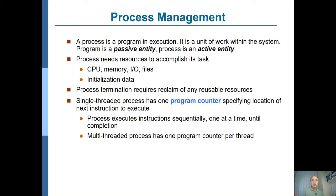Execution continues until the last instruction, which also terminates the whole process. Multi-threaded processes have one program counter per thread, because each thread could be at a different point, so the next instruction for each thread would be different. Note that if you have a single-core CPU, there is only one physical program counter register — it is assigned the value from the program counter of whichever thread is currently being executed.